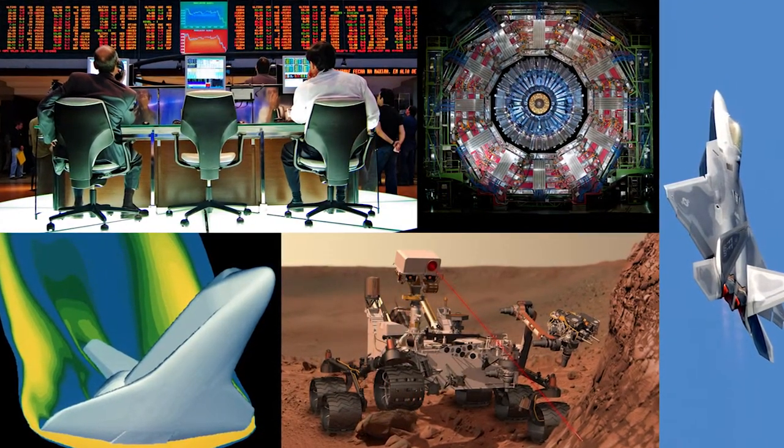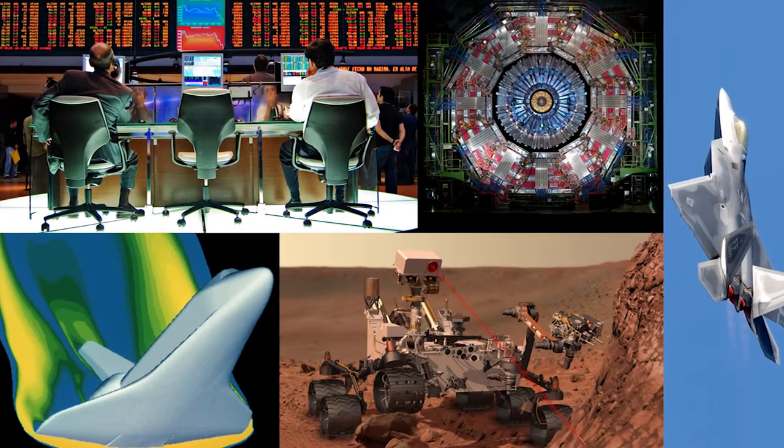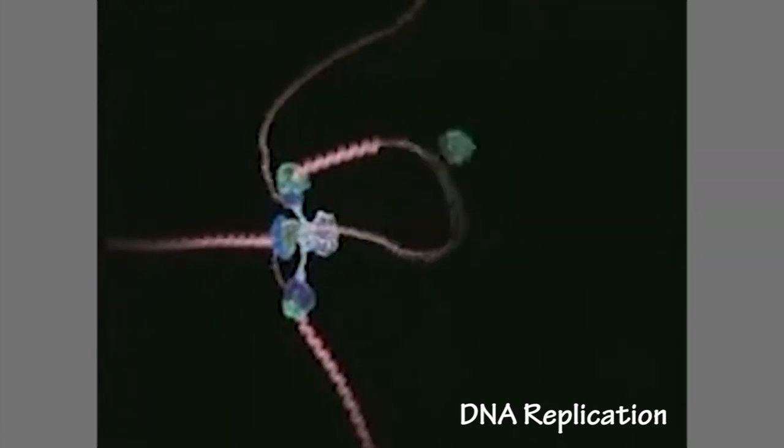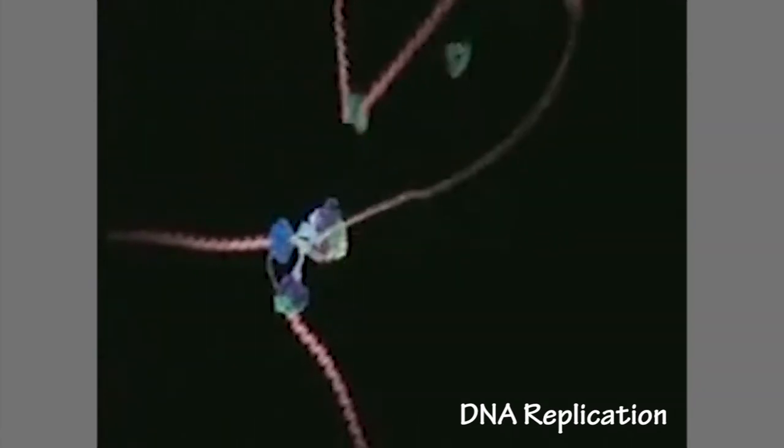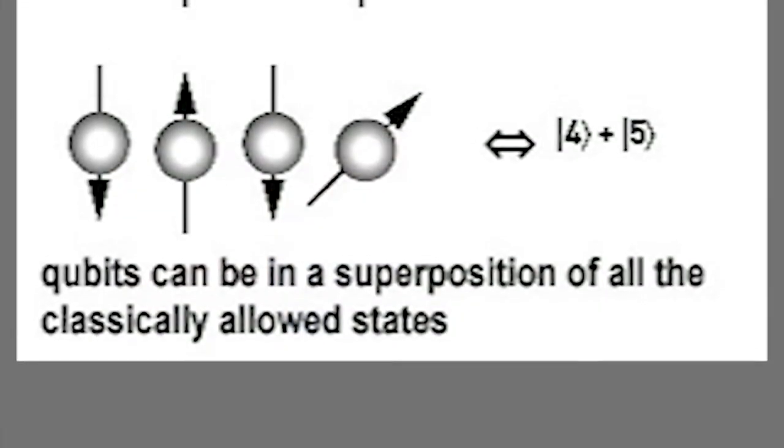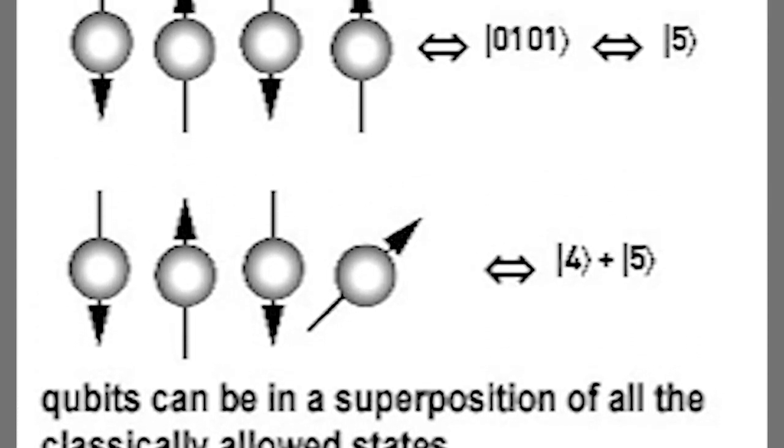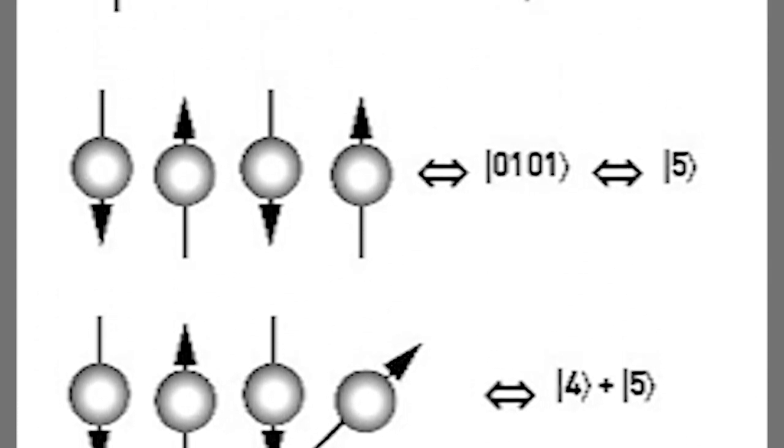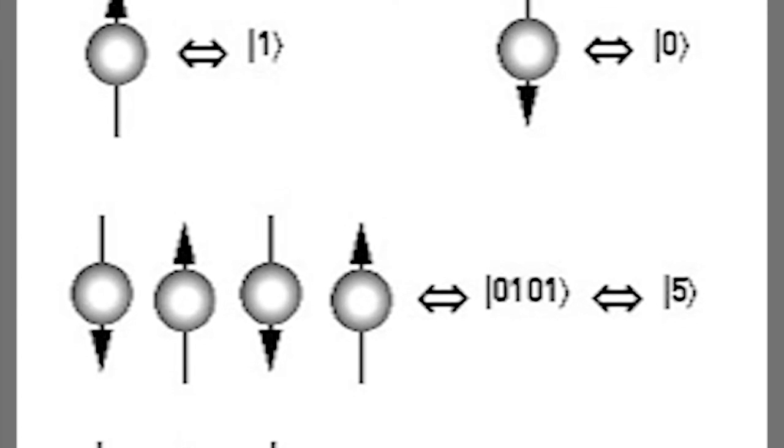Luckily, there are new types of transistors and even new computers being engineered today. Biological computers function by using cells' RNA and DNA, and could possibly interact with our brains and cells. Quantum computers can have an infinite number of values rather than just zero and one, allowing them to accomplish some tasks hundreds of times faster than transistors.